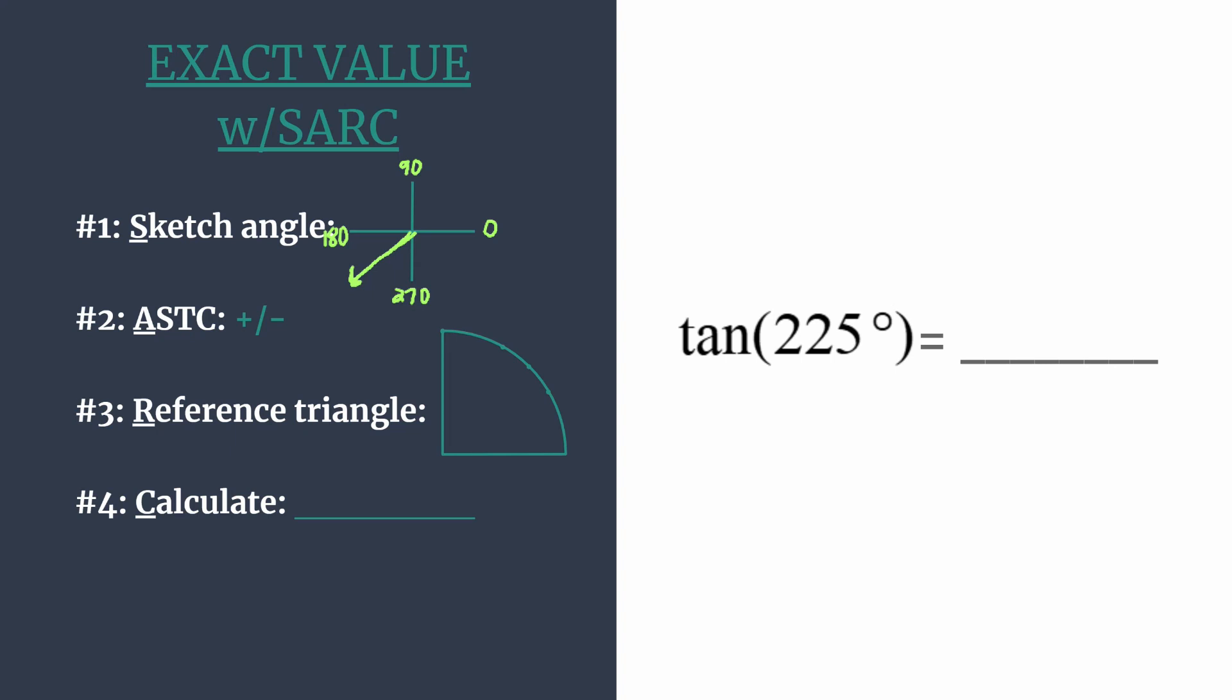So label from quadrant one, all students, that's sine, take in the third quadrant, that's tangent, classes. So that's the fourth quadrant cosine.